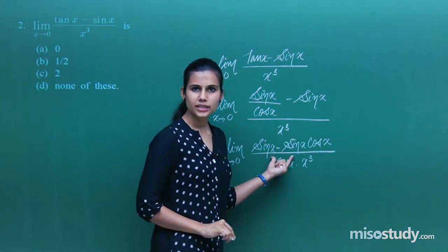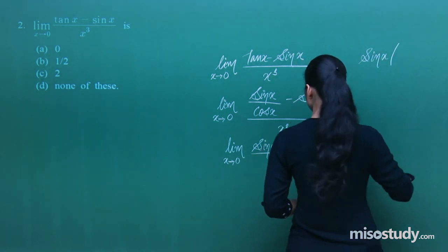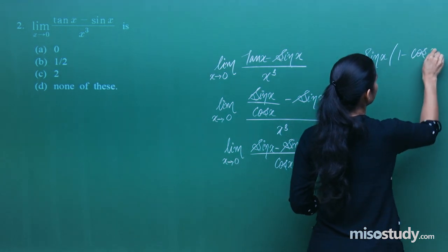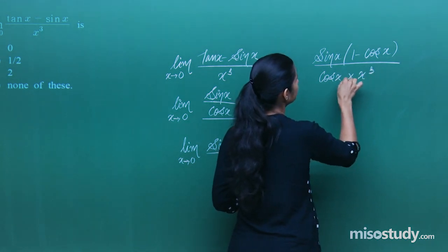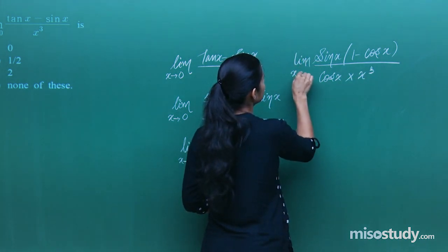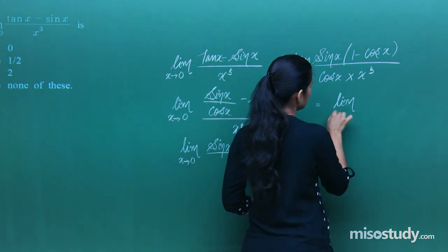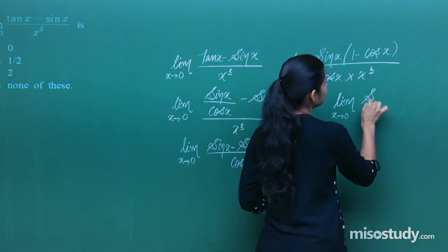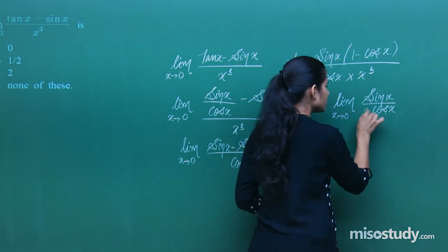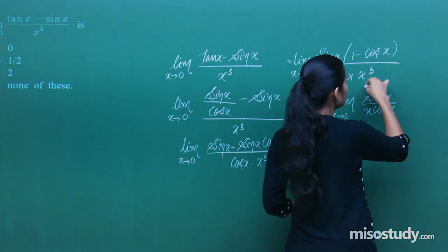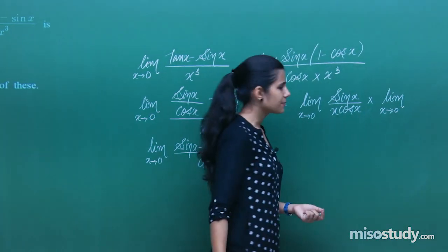Dissolving everything in terms of sin and cos, we get sinx minus sinx·cosx, whole upon cosx·x³. From the numerator we extract sinx as a common factor, leaving sinx(1 minus cosx) in the numerator and cosx·x³ in the denominator. Then we distribute the limit: sinx/(x·cosx) times (1 minus cosx)/x².